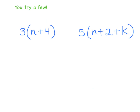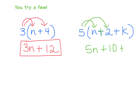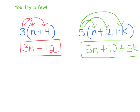I want you to try these two — push pause, then push play to see me go through them. The first one: 3 times (n plus 4). Take 3 times the first number: 3 times n is 3n. Keep your plus sign. Then 3 times 4 is 12. So that equals 3n plus 12 — I don't know what n is right now, but I could plug it in if I did. The second: distribute 5 times n, which is 5n. Keep your plus sign. Then 5 times 2 is 10. Plus 5 times k, which is 5k. So the simplified expression is 5n plus 10 plus 5k.